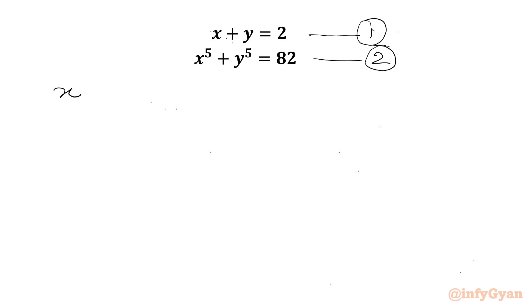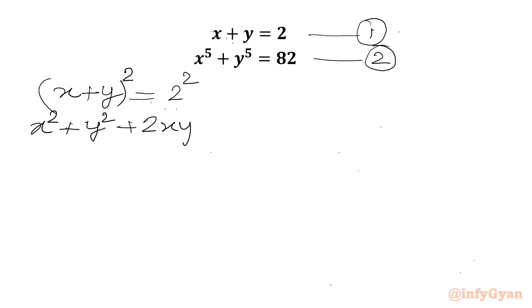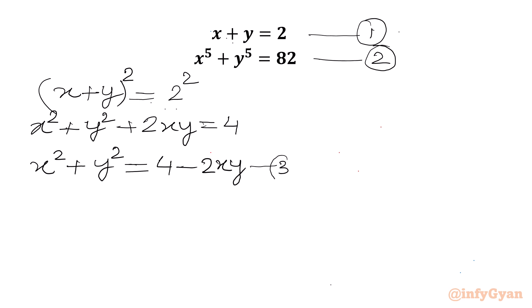Now I will consider squaring equation 1 on both sides. So I can write x plus y whole square equals 2 squared. I can use the a plus b whole square formula, which gives x squared plus y squared plus 2xy equal to 4. Or I can write x squared plus y squared equal to 4 minus 2xy. Let's say this is equation number 3.